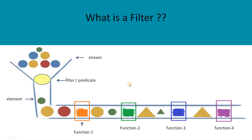Let's first understand what is a filter. For example, I have a stream of integer elements and I want to filter out the numbers which are greater than 100. I will pass a condition — check each element, if the element is greater than 100, pass that particular element, else skip that particular element. So in the filter function, to pass that condition, we use something called predicate.